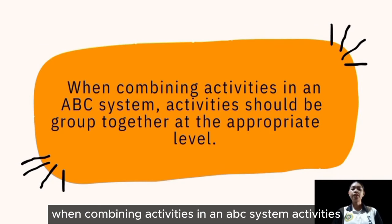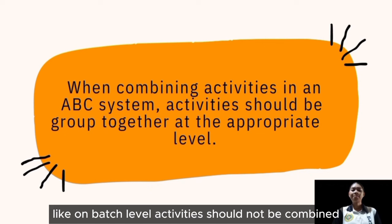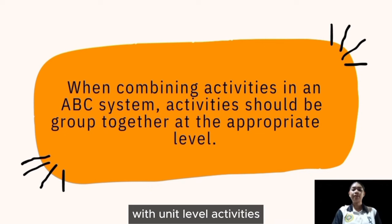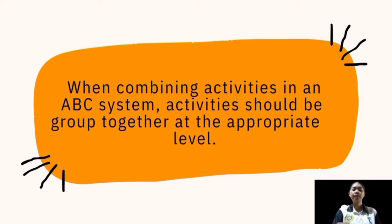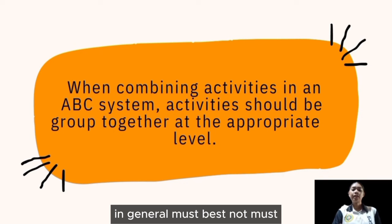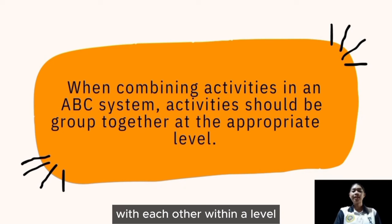When combining activities in an ABC system, activities should be grouped together at the appropriate level — batch-level activities should not be combined with unit-level activities, and product-level activities should not be combined with batch-level activities. In general, it is best to combine activities that are highly correlated with each other within the same level.